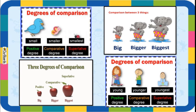These are all adjectives. If the adjective is small, then we add '-er' when changing it to the comparative degree, and we add '-est' to make it superlative. And if the adjective is longer, then mostly we add 'more' to the comparative and 'most' to the superlative degree.